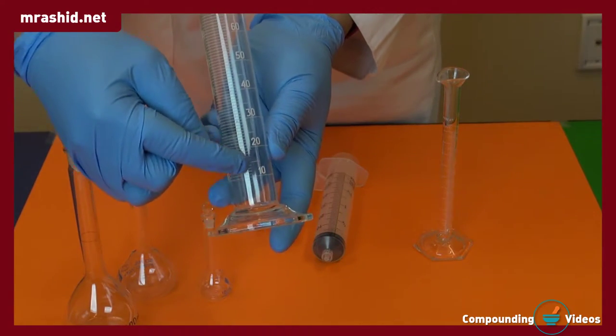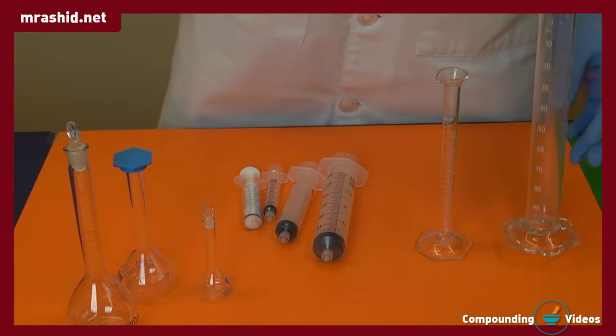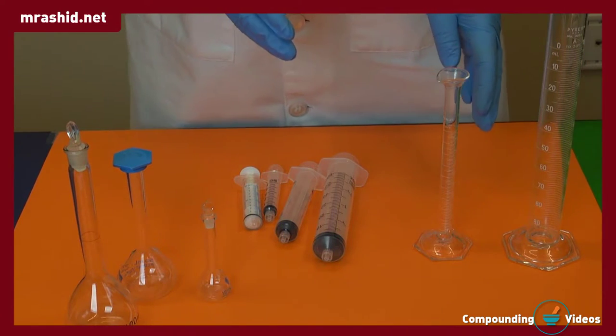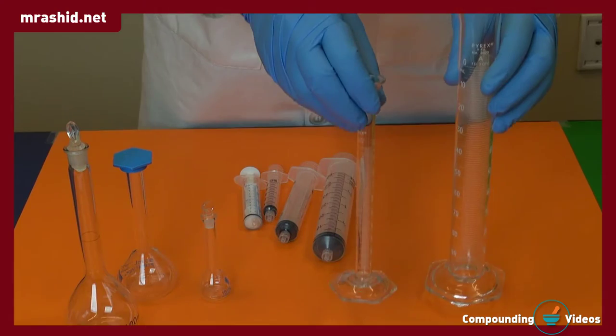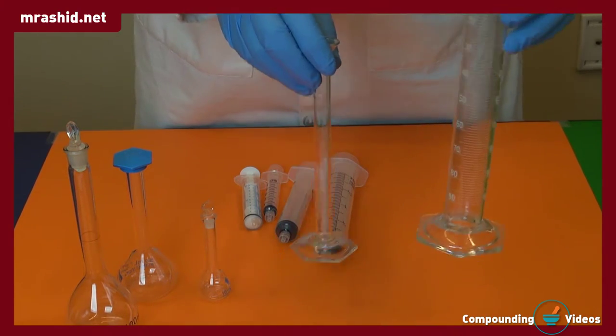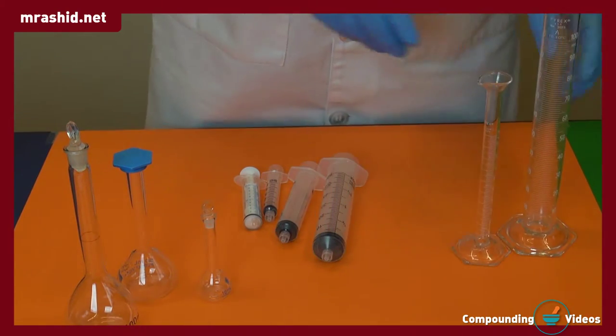Suppose we need to measure 10ml of a liquid. In that case, using the smaller one will be way better than the larger one. Reading from the lower meniscus and cylinders with wider diameter results in higher error.